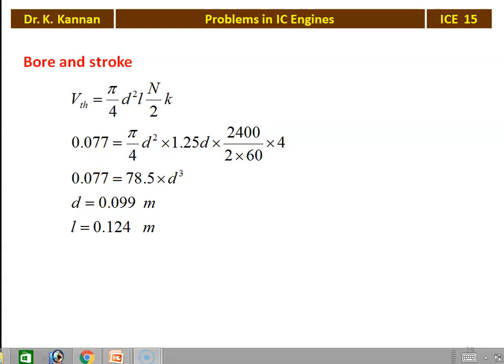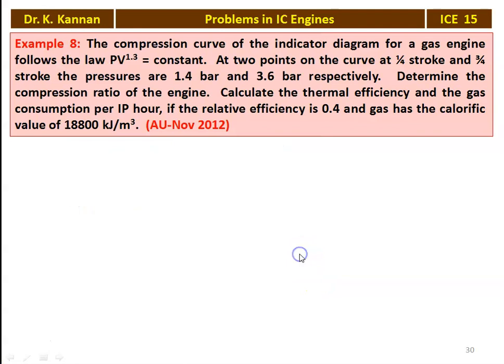Problem 8 from the November 2012 question paper: The compression curve of an indicator diagram for a gas engine follows the law PV^1.3 = constant. At 1/4 of the stroke, pressure is 1.4 bar; at 3/4 of the stroke, pressure is 3.6 bar. Determine the compression ratio, calculate the thermal efficiency, and gas consumption per IP hour if relative efficiency is 0.4 and calorific value of gas is 18,800 kJ/m³.